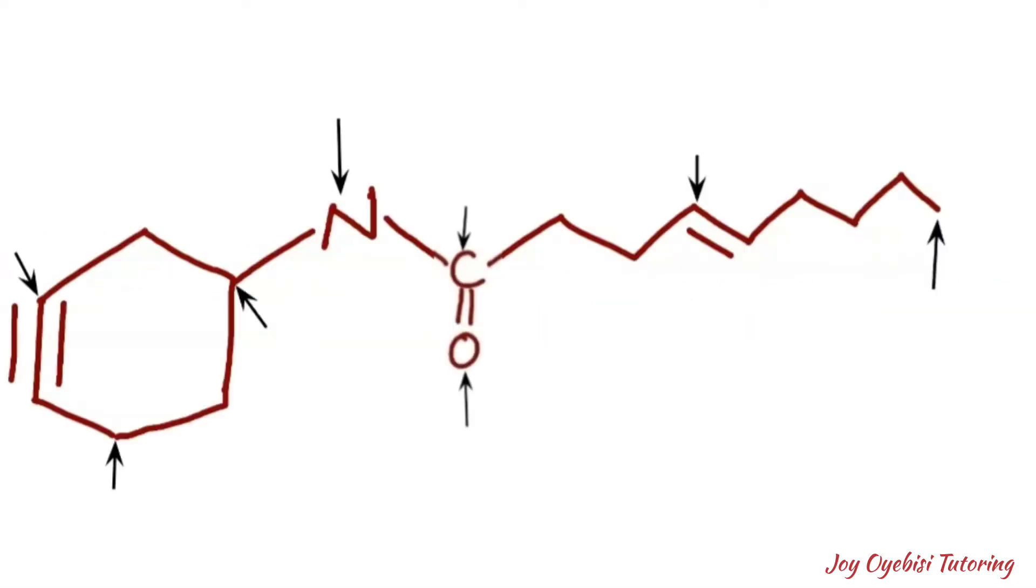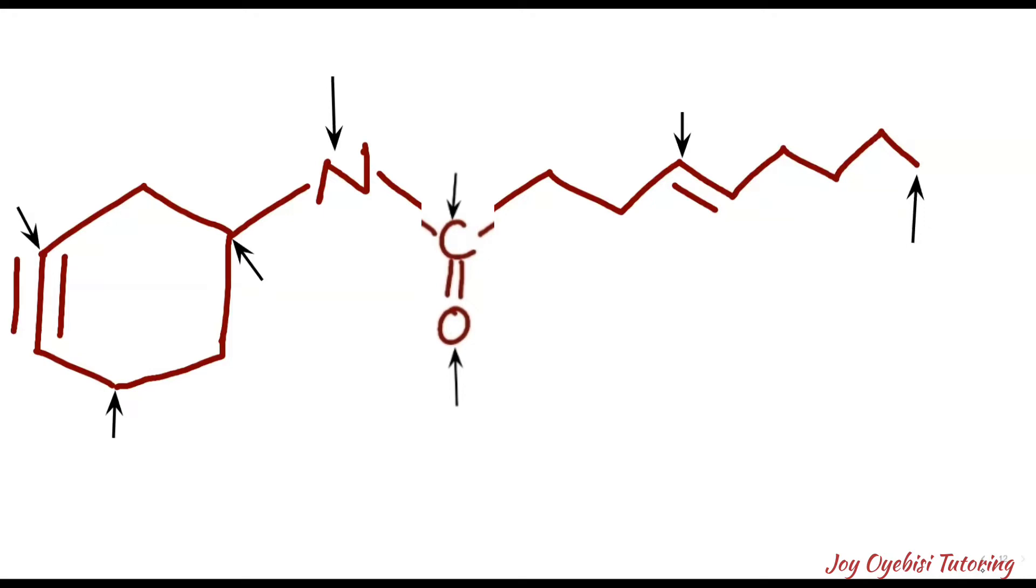So for this first question, here we're asked to identify the hybridization of all the marked or indicated atoms. Now for hybridization, we're going to be looking at just the three main types, which is the sp, sp2, and sp3.